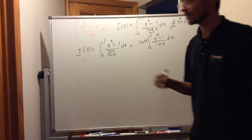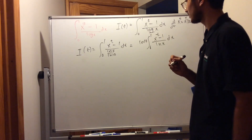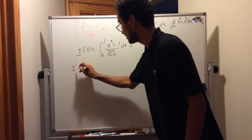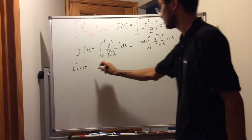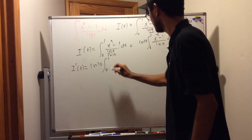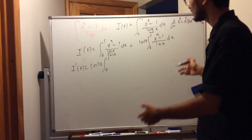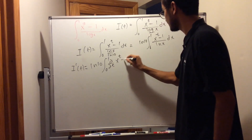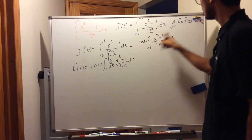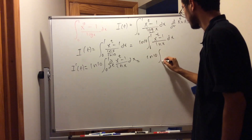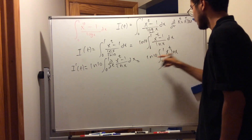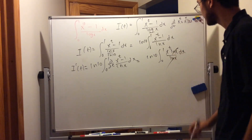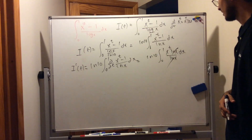Now we can differentiate i(t). So let's find i'(t). We take the derivative of i(t), which gives us ln(10) times the integral from 0 to 1, and then we take the partial derivative with respect to t inside the integral — the partial derivative with respect to t of x to the power of t, minus 1, divided by ln(x), dx. We know that equals ln(10) times the integral from 0 to 1 of x^t · ln(x) divided by ln(x), dx. The ln(x) cancels out, which makes our lives a lot easier.